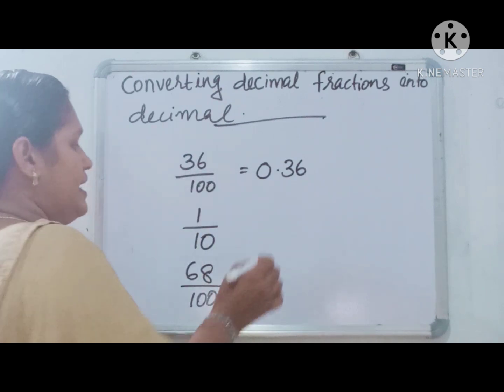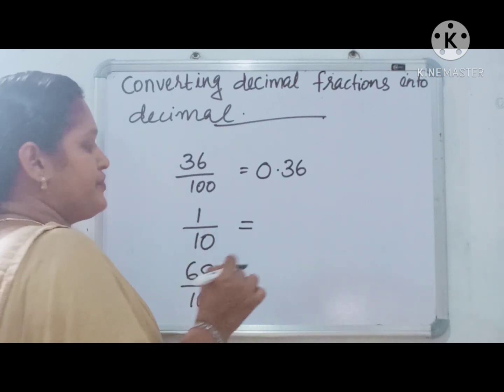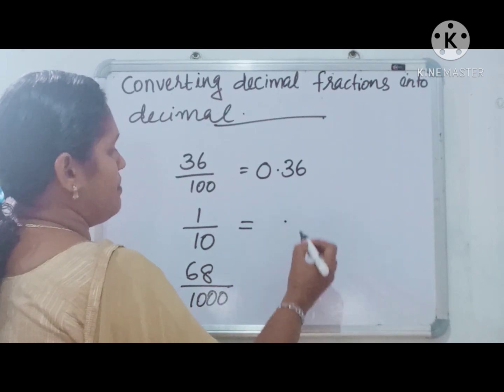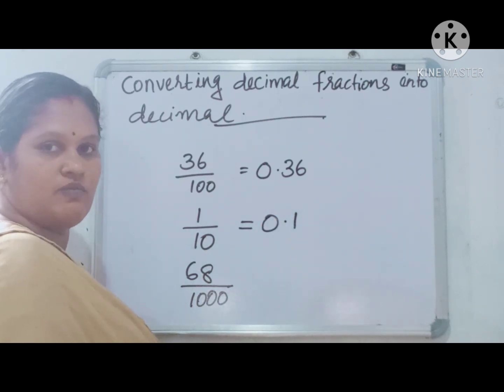Next, 1 by 10. How many zeros are there in 10? 1 zero. So we have to move 1 place forward. This is 0.1.